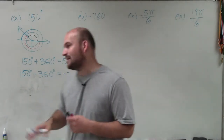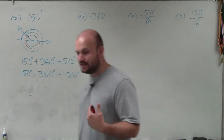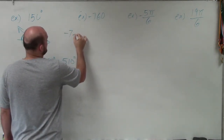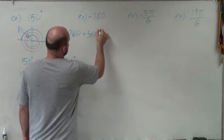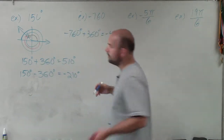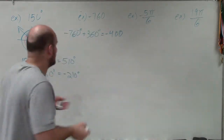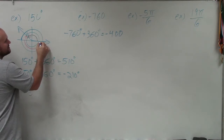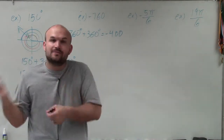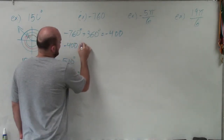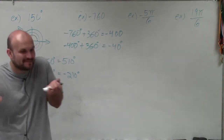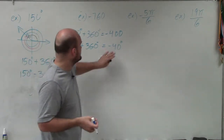Now let's do negative 760 a bit quicker. We know we can keep adding and subtracting 360 degrees. So here I have negative 760. The first thing I want to do is add 360 degrees, which gives me negative 400 degrees. But negative 400 degrees is still over — not between 0 and 360 — so I need to add 360 degrees again. When doing that, I get negative 40 degrees. Negative 40 degrees is between 0 and 360 — just in the negative direction — so we're good.